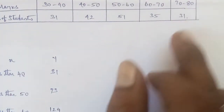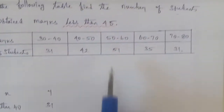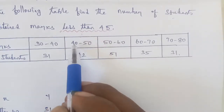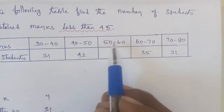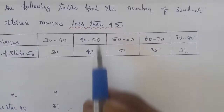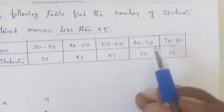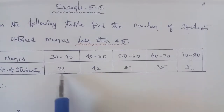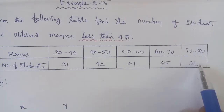The answer we need is for less than 45, which falls in the middle of the table. So we apply Newton's forward interpolation formula. The number of data points is 1, 2, 3, 4, 5 — there are 5 data points.